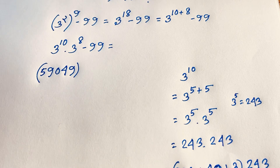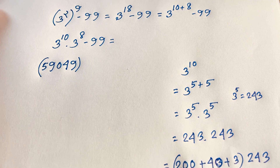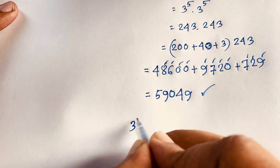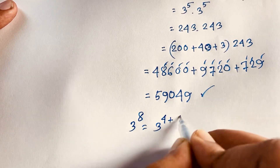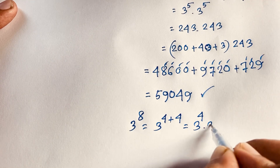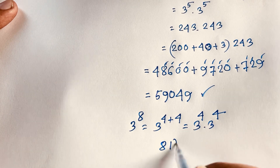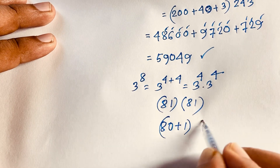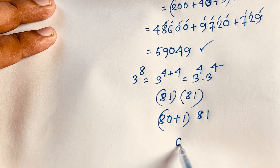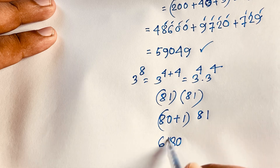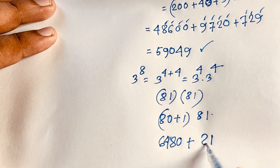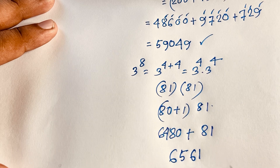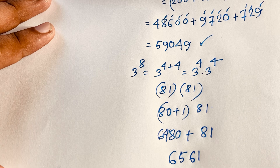Now we find 3 to the power 8. So 3 to the power 8 equals 3 to the power 4 plus 4, which is 3 to the power 4 times 3 to the power 4, equals 81 times 81. Writing 81 as 80 plus 1: 80 times 81 gives 6480, and 1 times 81 gives 81. Adding, 8 plus 8 is 16, carry 1, giving 6561. So 3 to the power 8 equals 6561.